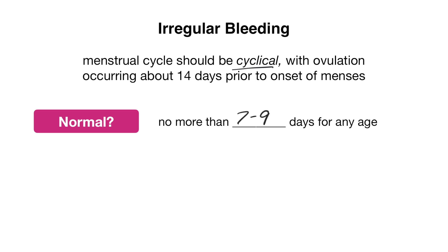To summarize: amenorrhea is the absence of a menstrual cycle. Frequency refers to how often the menstrual cycle is occurring. Regularity refers to how predictable that menstrual cycle is. Let's conceptualize regular versus irregular bleeding through the form of a diagram.